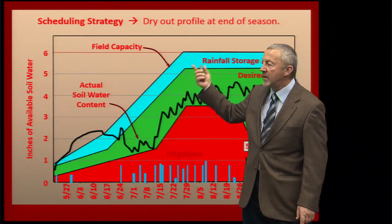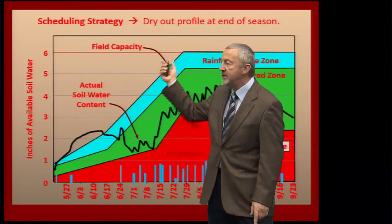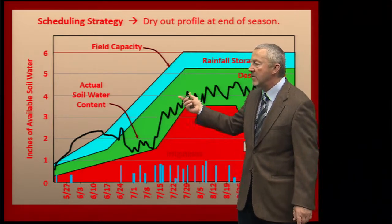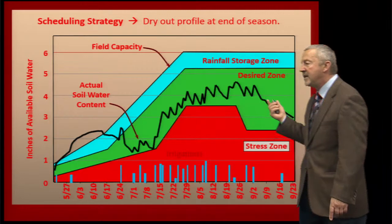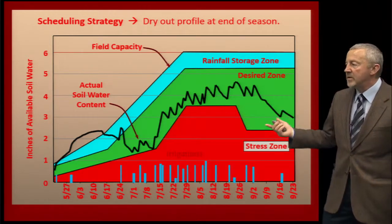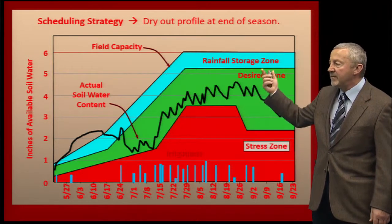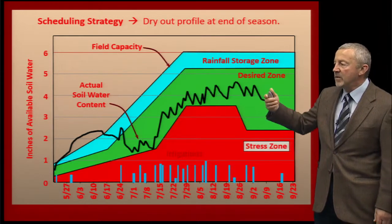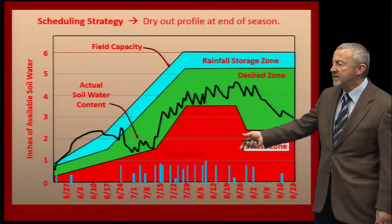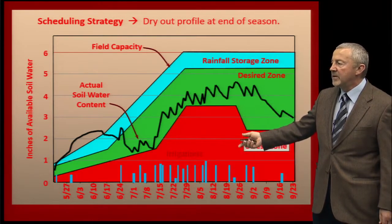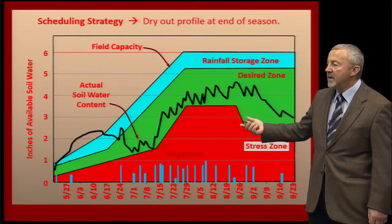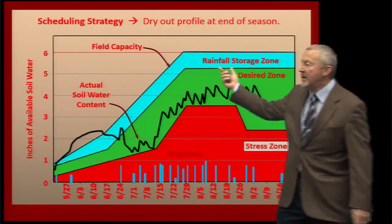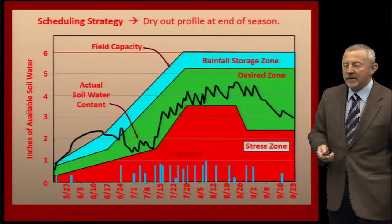As we grow our root zone — as you can see by the lines going up here — our root zone is growing during the growing season. What we want to do is try to keep our soil water content in the green range, which is the go zone or grow zone. We want to stay out of the red zone below because that's going to affect our yield. That lower zone is the stress zone in terms of water available to the crop. We're also going to leave some room for rainfall at the top.